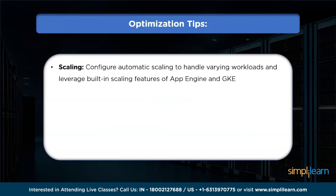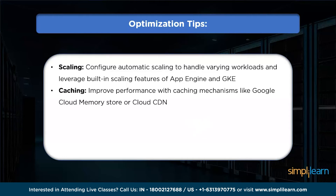Now let's discuss optimization tips. First is scaling — configure automatic scaling for your application to handle varying workloads. App Engine and GKE offer built-in scaling features that can automatically adjust the number of instances or containers based on demand. Next is caching — utilize caching mechanisms like Google Cloud Memorystore or Cloud CDN to reduce latency and improve performance by caching frequently accessed data.